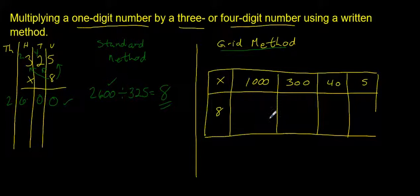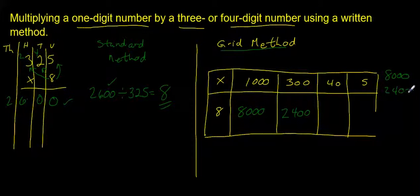So 8 times 1,000 is 8,000 and I write the 8,000 here. 8 times 300 is 2,400. I write 2,400 here, and I'm trying to keep my digits in the correct columns. I don't have squared paper so I'm just doing the best I can.